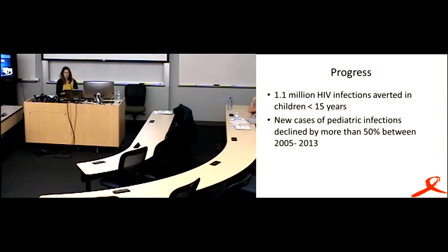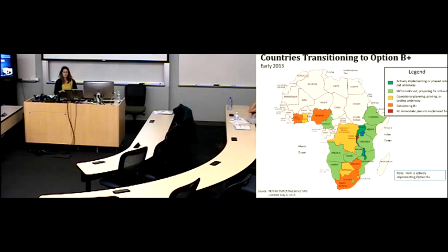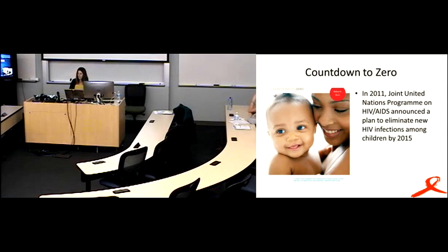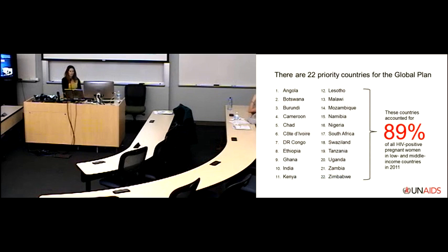So, what progress have we made? They estimate that 1.1 million HIV infections have been averted in children less than 15 years of age since the start of PMTCT programs, and that new cases of pediatric infections have declined by more than 50% in just the last several years, which is actually huge gains. Countries that are transitioning to Option B+ are shown here. So, the ones in dark green, Rwanda, Uganda, and Malawi, are ones who have already accepted Option B+ and are rolling it out fully. The lighter green, the MOH has supported these and planning to roll out. And the yellow and orange are considering it, but haven't started.